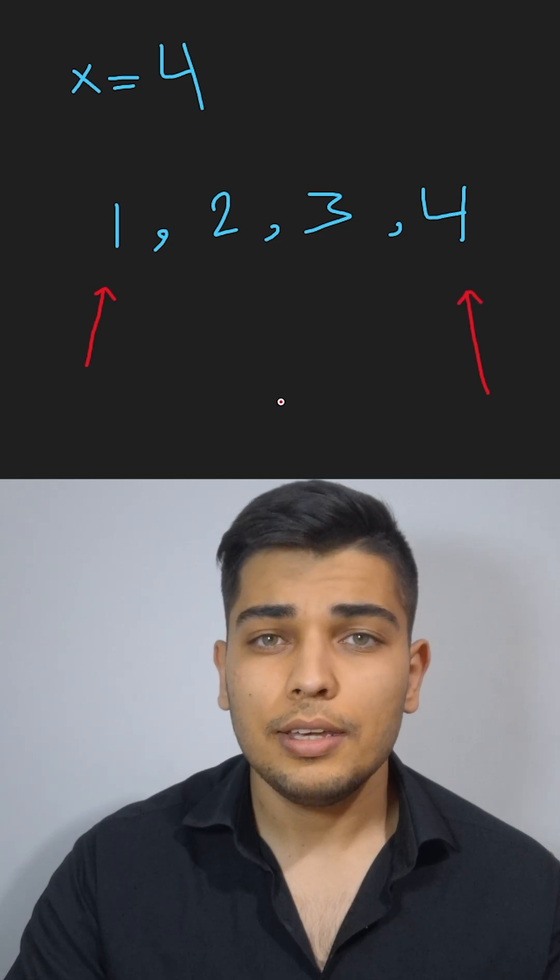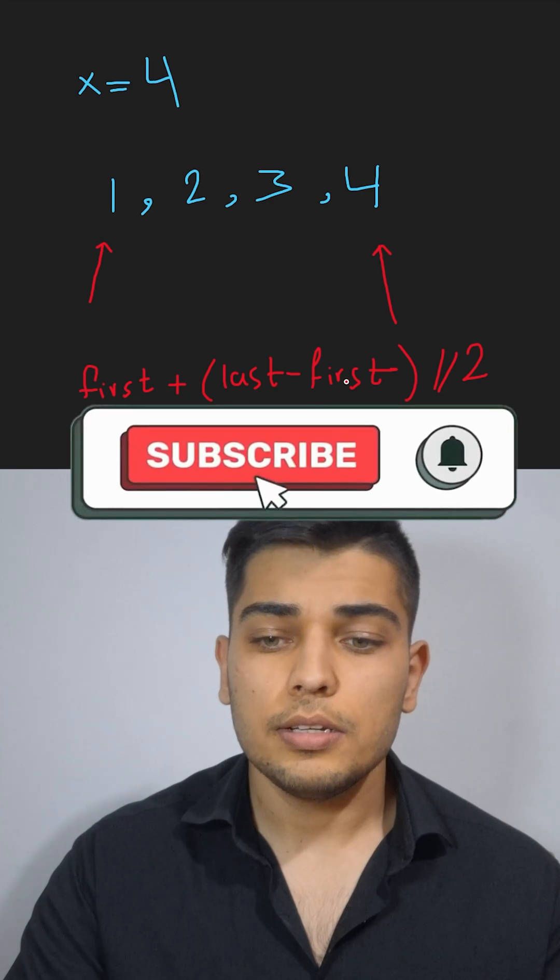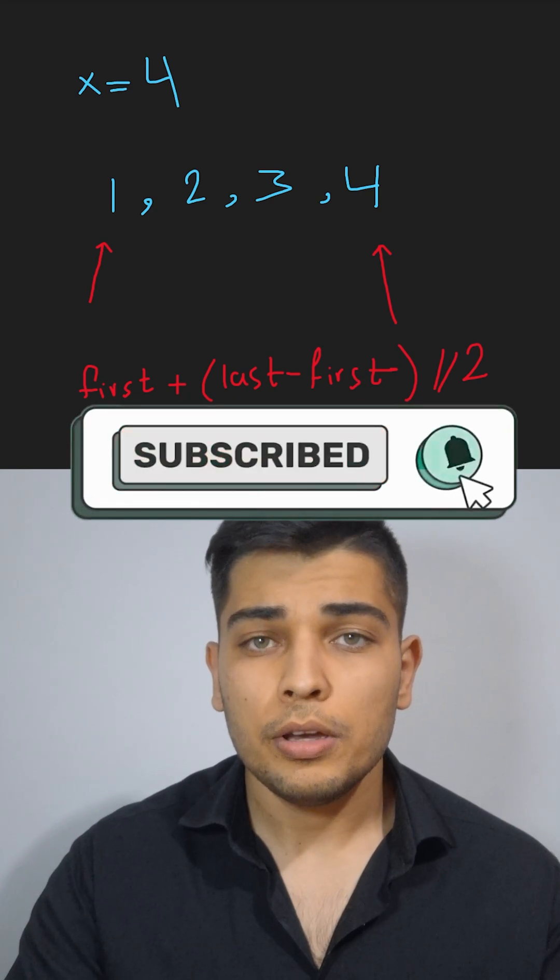And then calculate the middle like this: first plus (last minus first) integer division by 2.